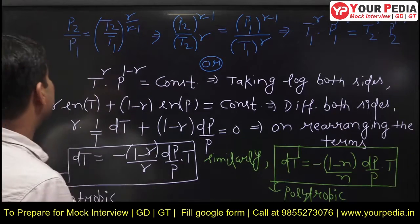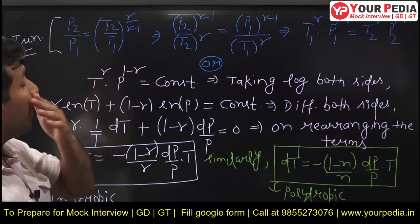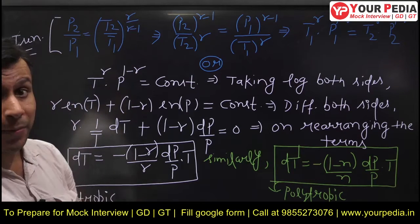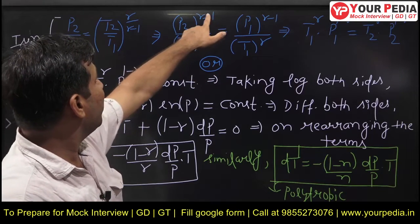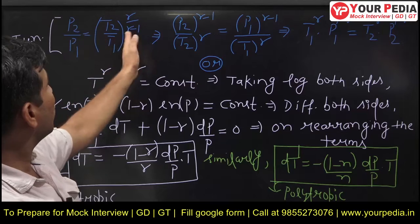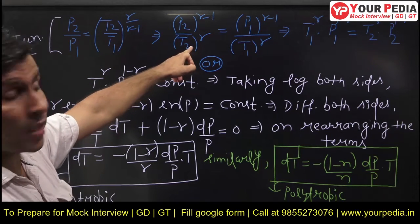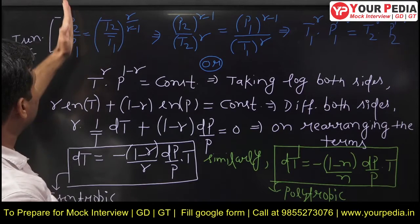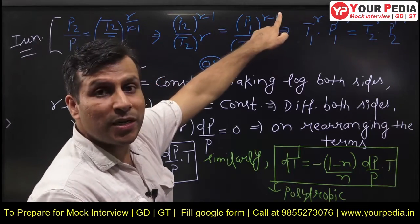To get the formula, let us first consider an isentropic process. For an isentropic process: P2/P1 = (T2/T1)^(γ/(γ−1)), because T2/T1 = (P2/P1)^((γ−1)/γ). Simplifying: P2^(γ−1) / T2^γ = P1^(γ−1) / T1^γ. Further simplification gives T1^γ · P1^(1−γ) = T2^γ · P2^(1−γ). So this particular quantity T^γ · P^(1−γ) is constant. Taking the log of both sides: γ·ln T + (1−γ)·ln P = constant.